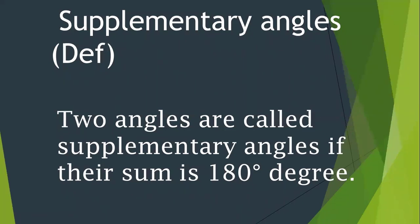Let's come to the definition of supplementary angles. Two angles are called supplementary angles if their sum is 180 degrees. We know that for complementary angles, the sum of the two angles is 90 degrees. In the same way, for supplementary angles, two angles are supplementary if their sum is 180 degrees.